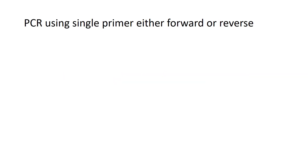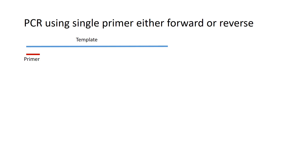In this method you will use either a forward primer or a reverse primer. In normal PCR you will be using both forward and reverse primers, but in asymmetric PCR you will use either a forward primer or a reverse primer only, with a single-stranded or double-stranded DNA template.